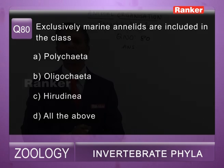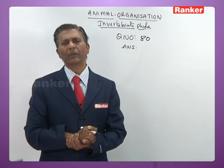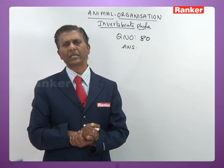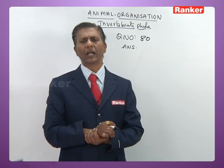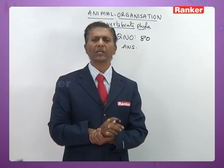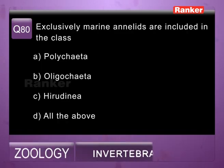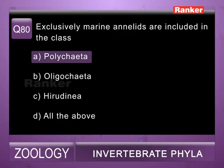Question eighty-one: the common name of Polychaeta is — a) icon worms, b) earthworm, c) paddle worms, d) bristle worms. Polychaetes are commonly called bristle worms, ragworms, sandworms, or clamworms. So eighty-first question correct answer is d) bristle worms.